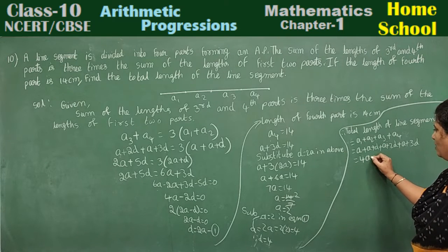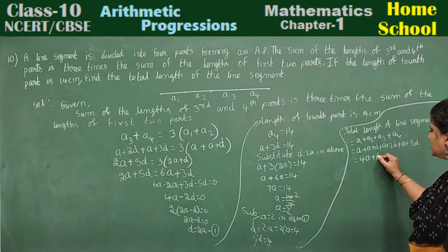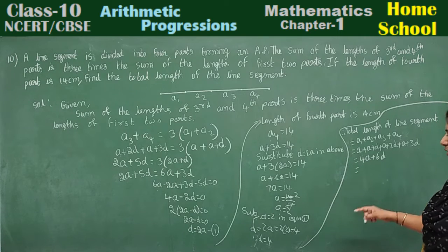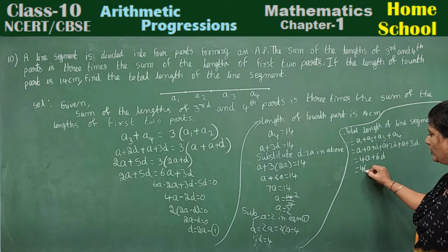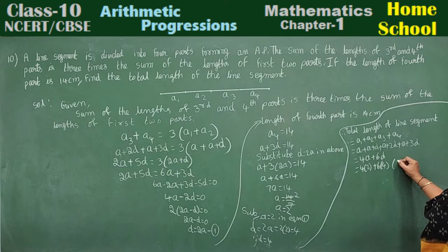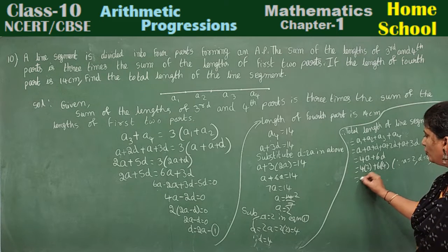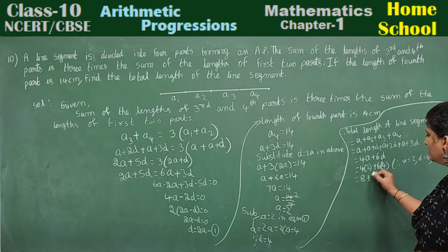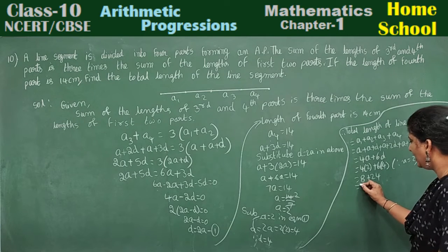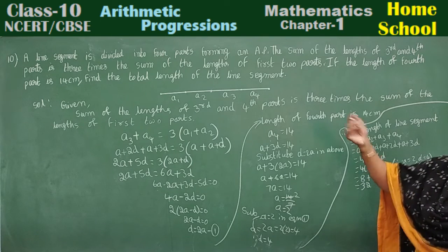Adding all terms: 4a plus d plus 2d plus 3d gives 4a plus 6d. Now substitute a equals 2 and d equals 4: 4 into 2 plus 6 into 4 equals 8 plus 24 equals 32. The total length is 32 centimeters — centimeters because the fourth part was given as 14 centimeters.